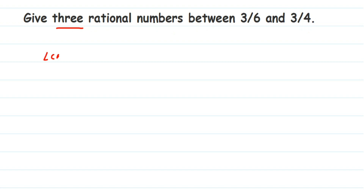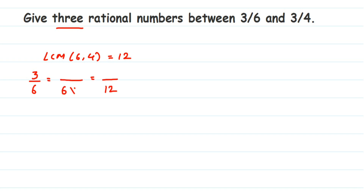We are going to take the LCM of 6 and 4, which is 12. The second step is to make both denominators equal to 12. For the first number, 3/6, we need to change the denominator 6 to 12. We multiply by 2, so we also multiply the numerator by 2: 3 × 2 = 6 and 6 × 2 = 12. So 6/12 is an equivalent rational number of 3/6.